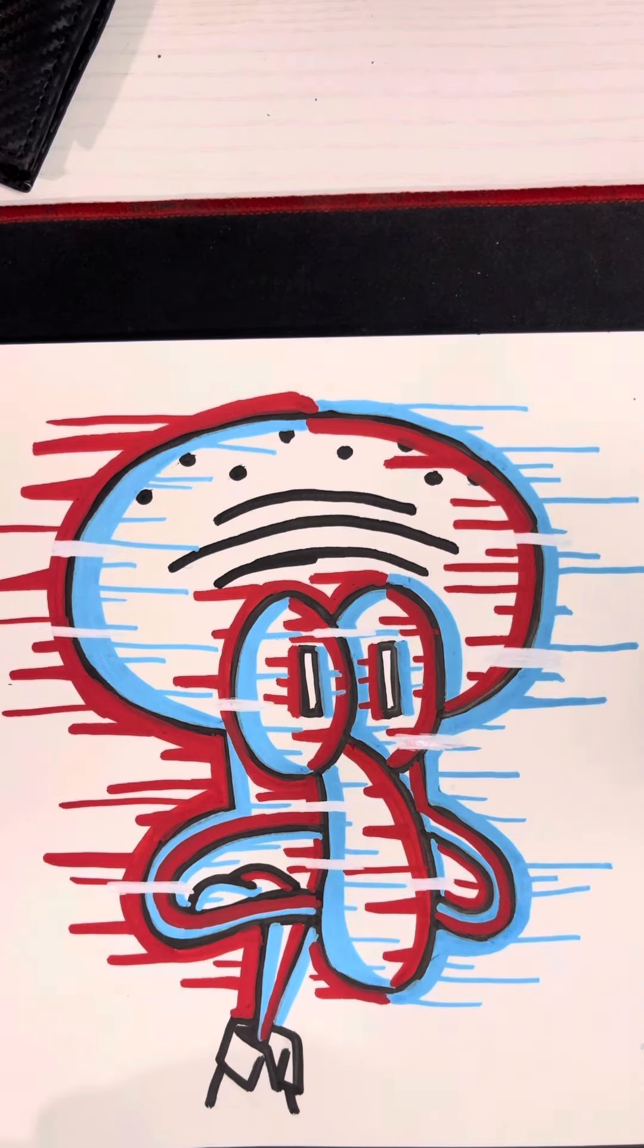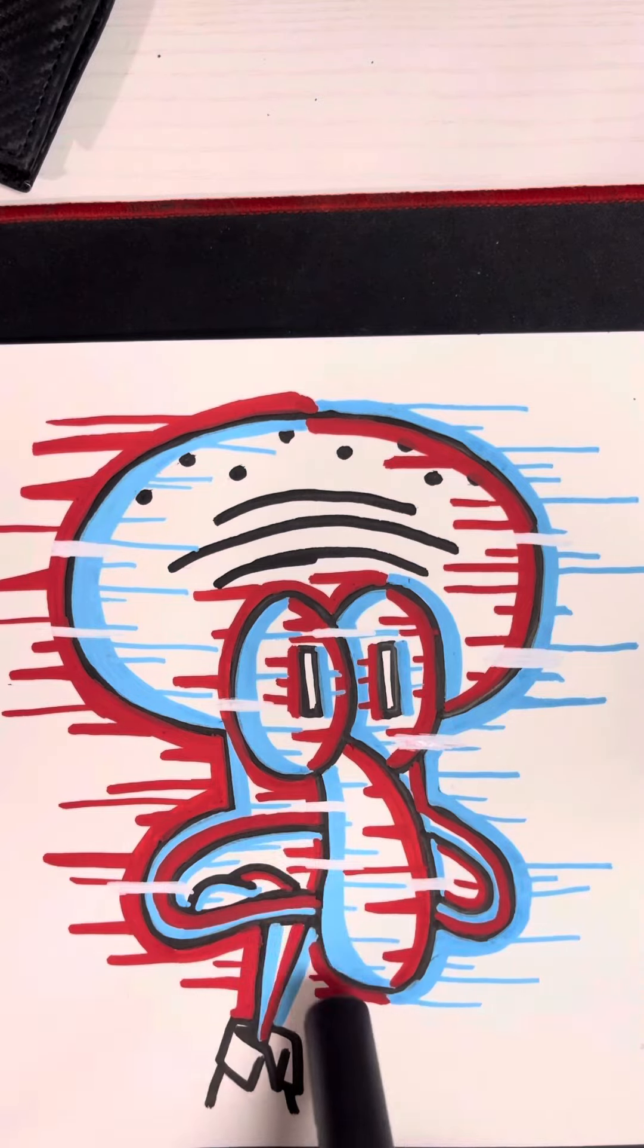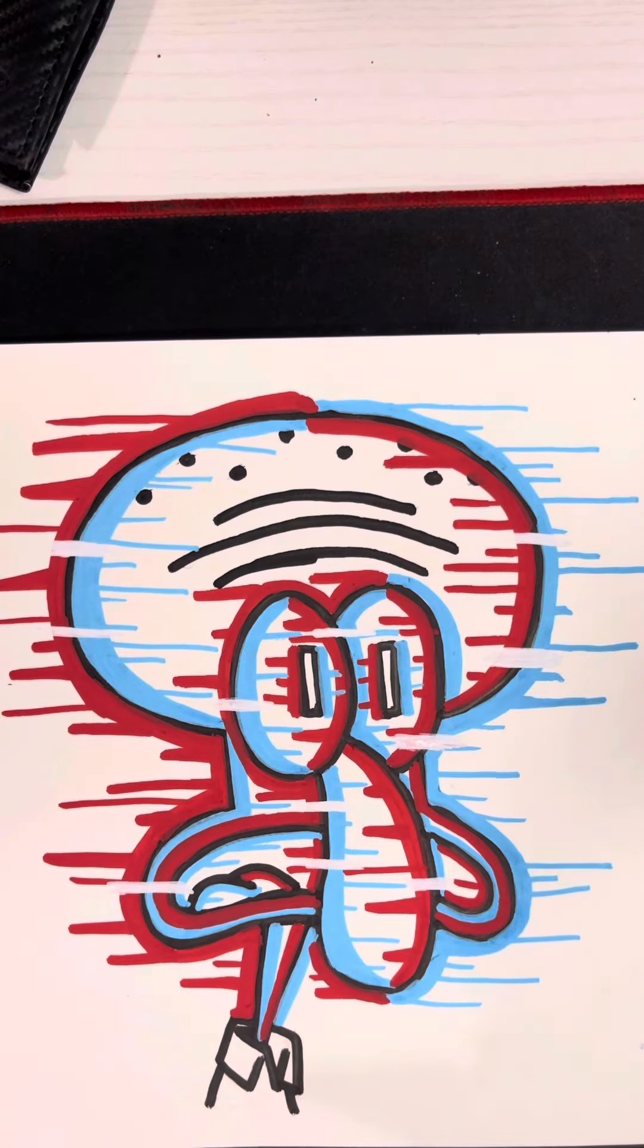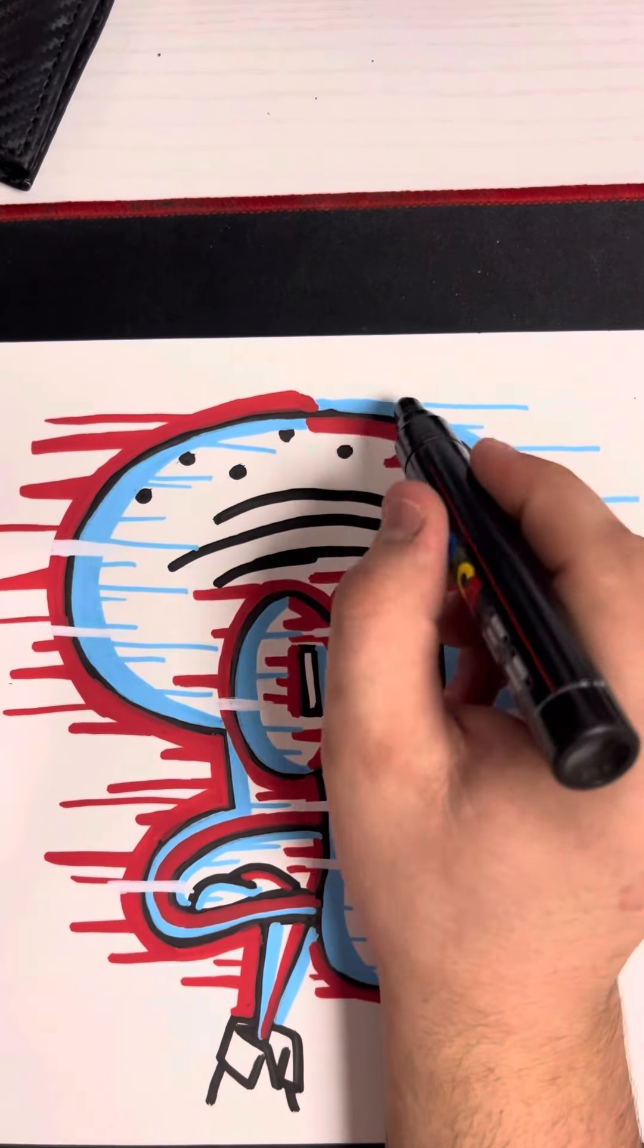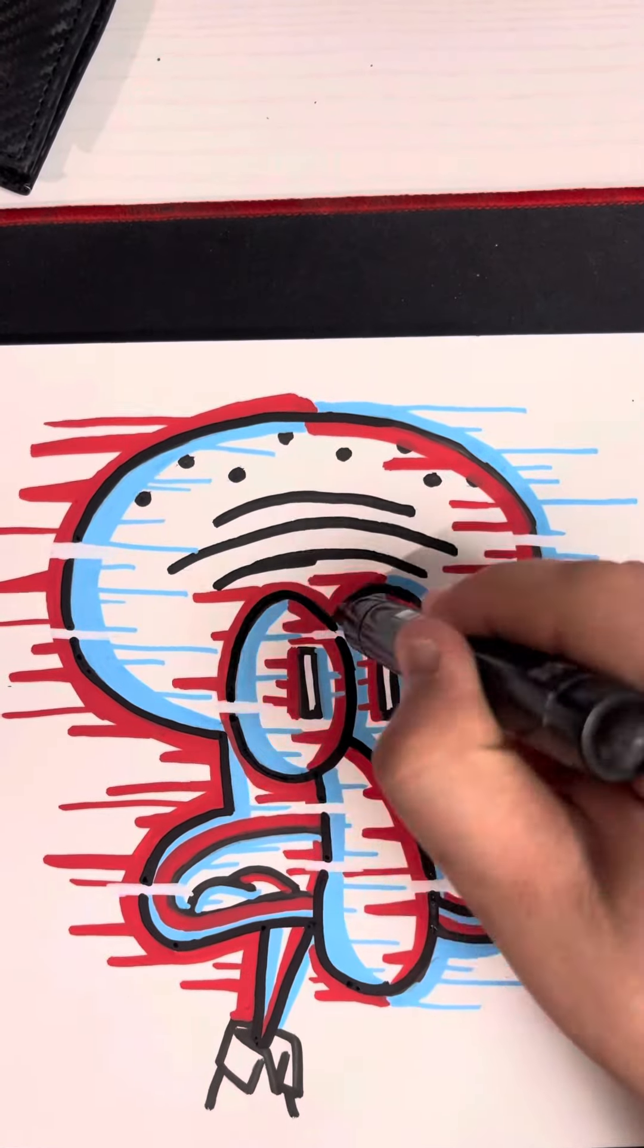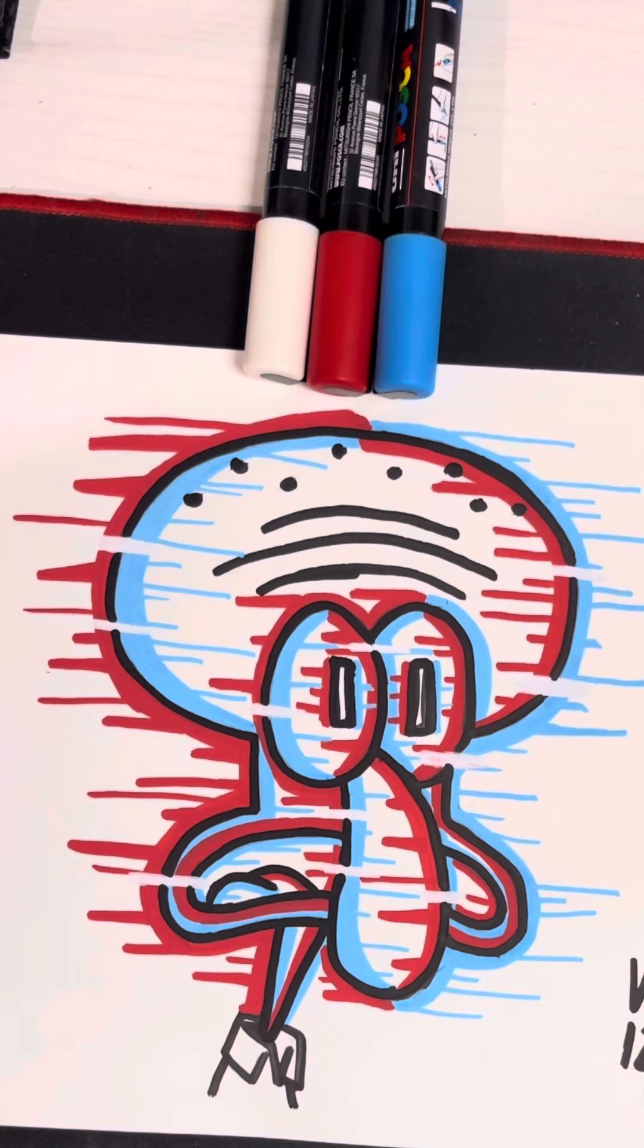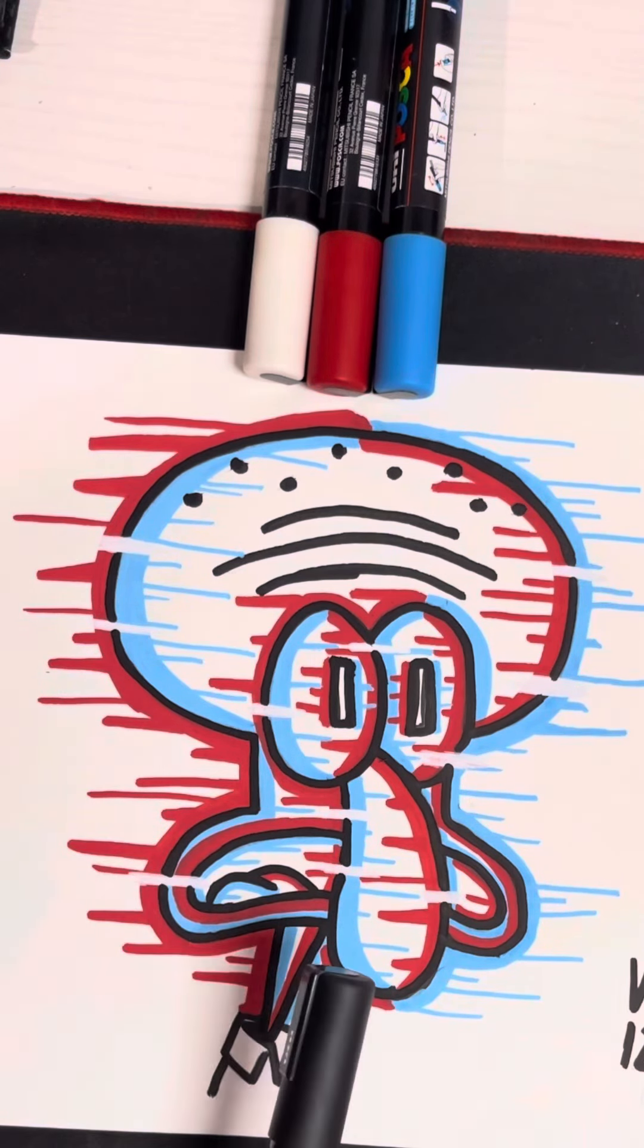Once you're done doing all of your white marks to give it that glitch effect you want to re-go over all of your black lines with the black Posca marker just to freshen up your lines. Now that we're done going over our black lines one more time this is our end result.